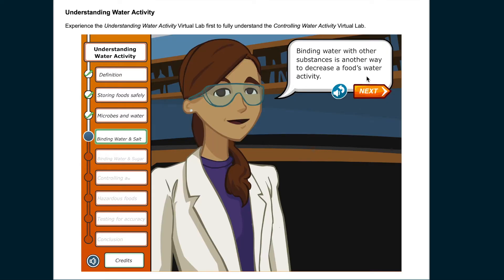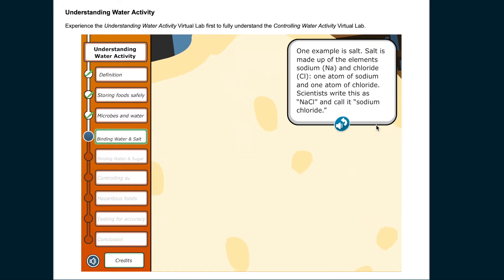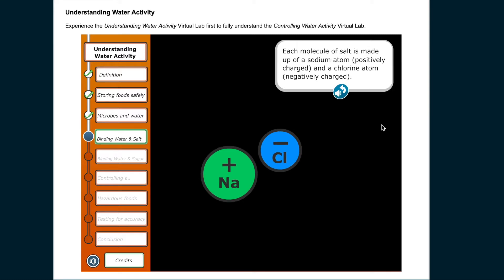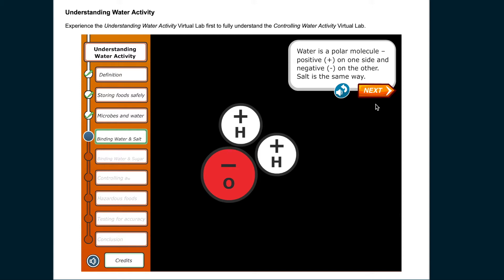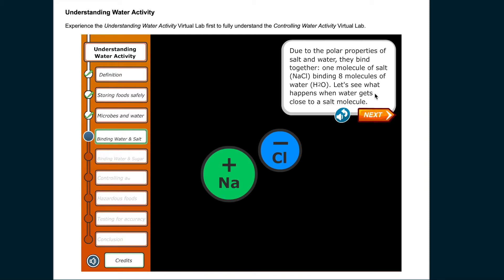Binding water with other substances is another way to decrease a food's water activity. One example is salt — NaCl — made up of sodium (Na) and chloride (Cl). Each molecule of salt has a positively charged sodium atom and a negatively charged chlorine atom. Water (H2O) is a polar molecule, positive on one side and negative on the other. Due to the polar properties of salt and water, they bind together — one molecule of salt binding eight molecules of water.